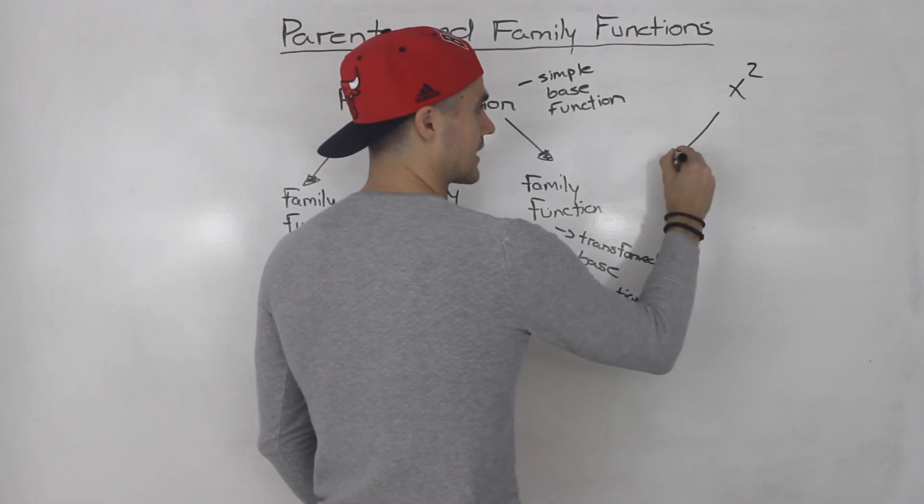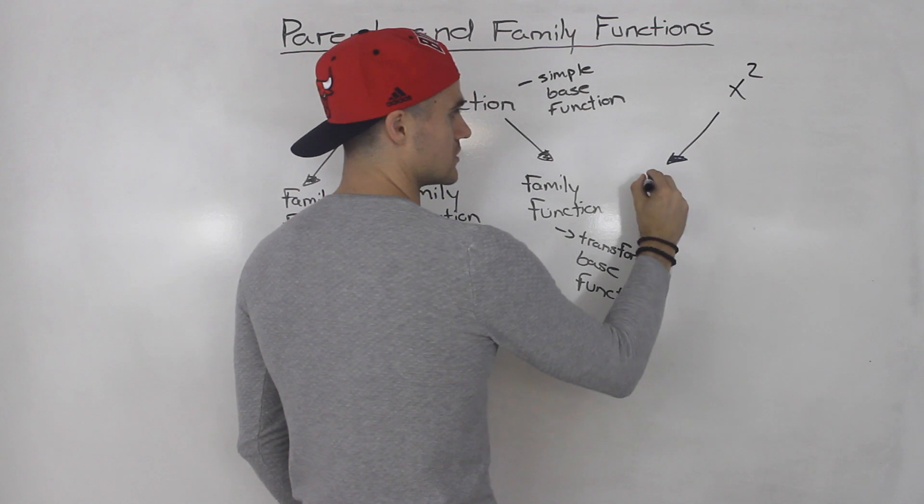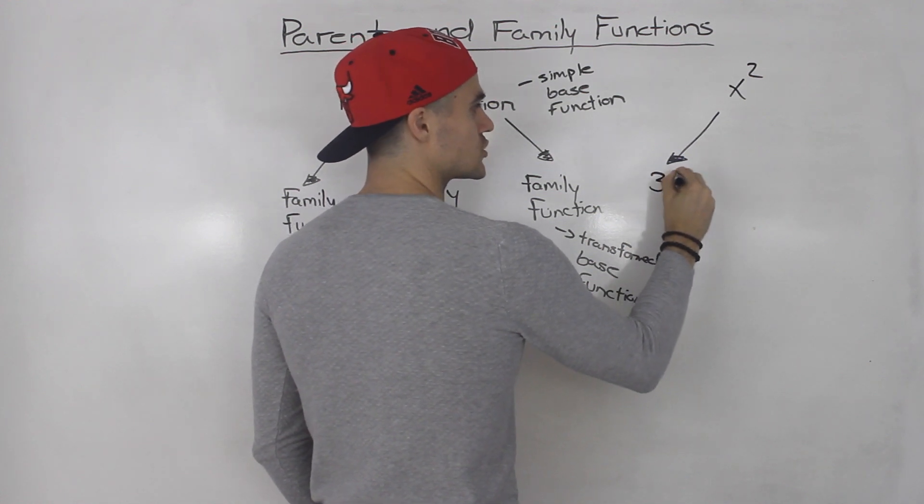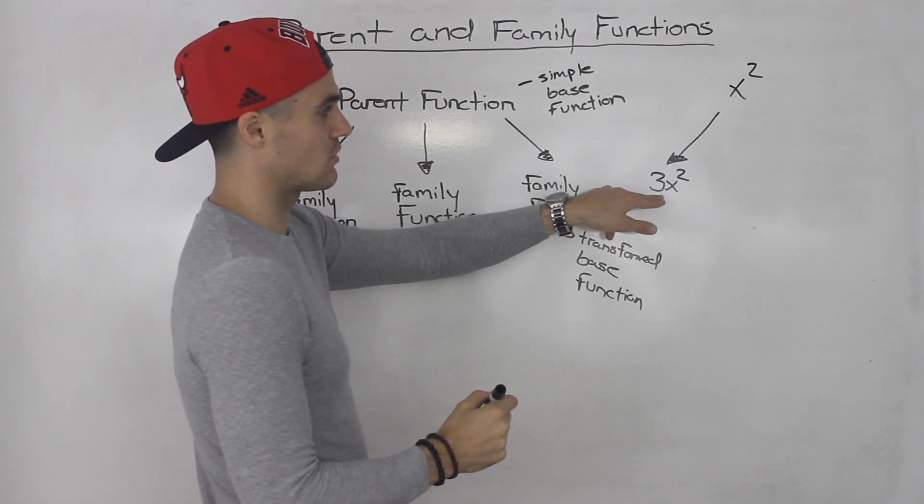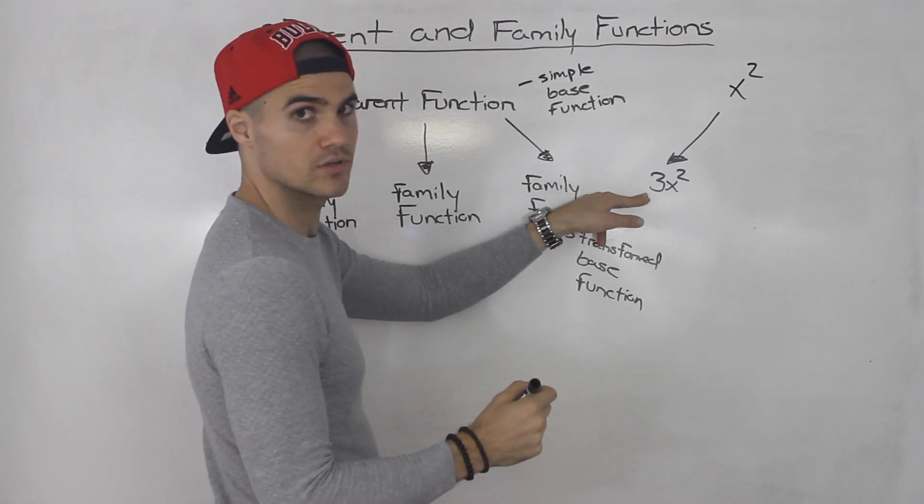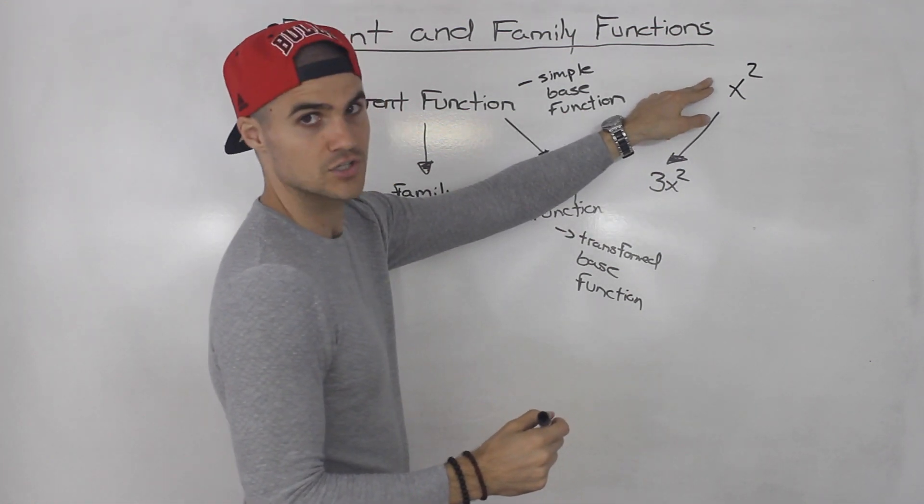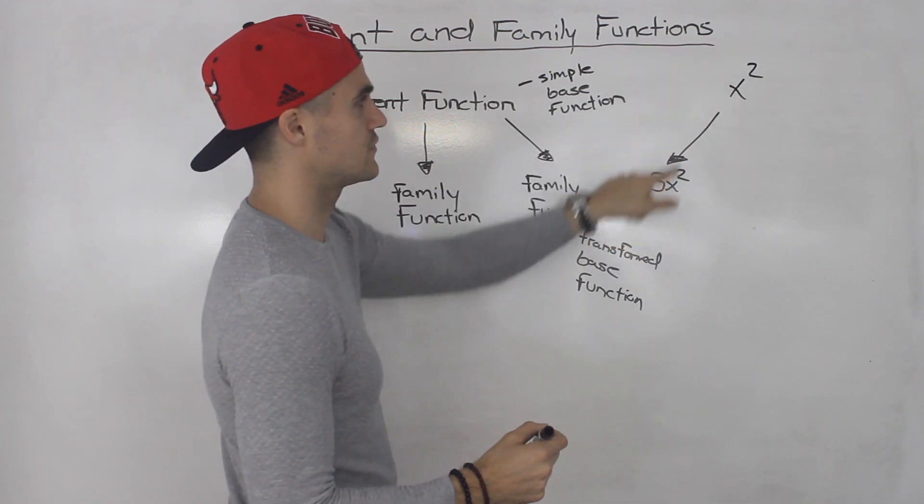But you could take x squared and you could do a bunch of things with it. So you can maybe vertically stretch it by a factor of three. So 3x squared. This here is a transformed quadratic function. This is a family function of this.